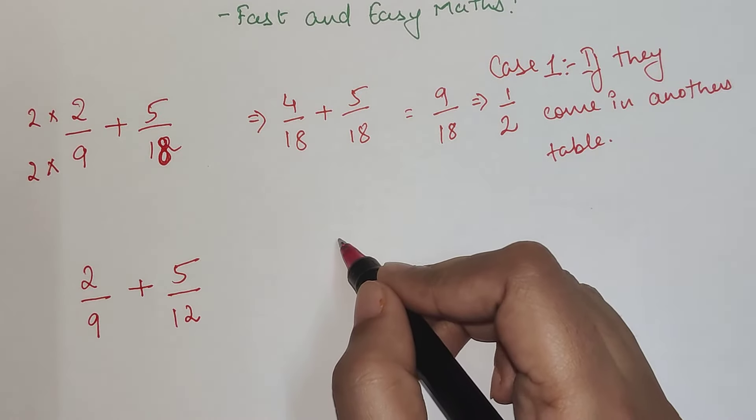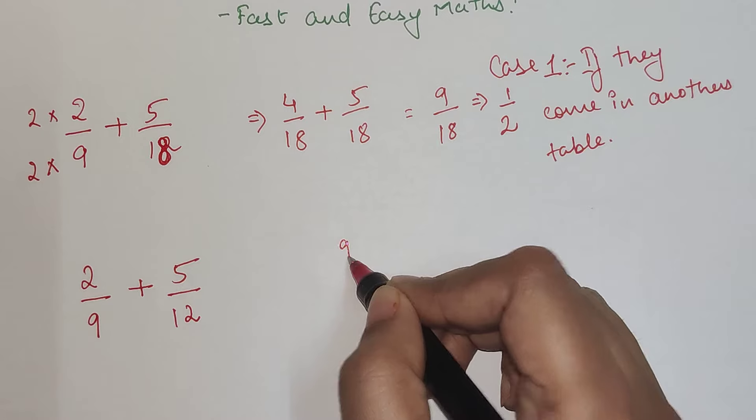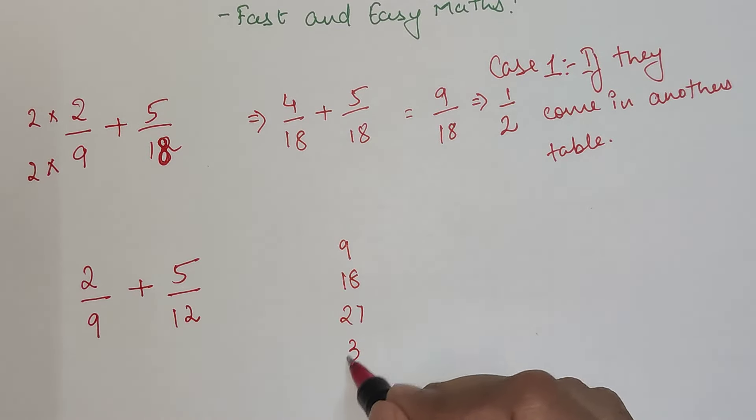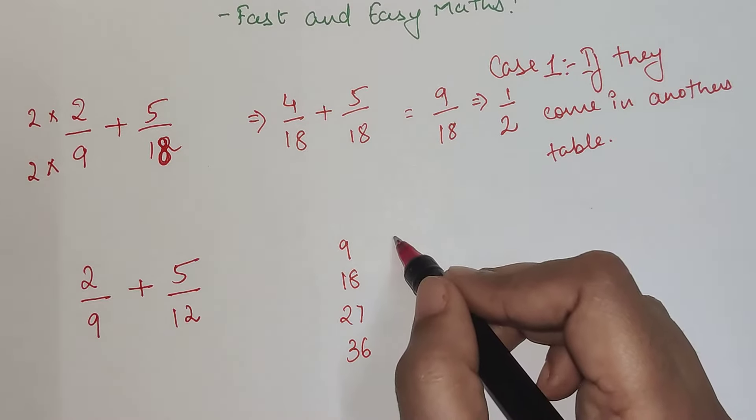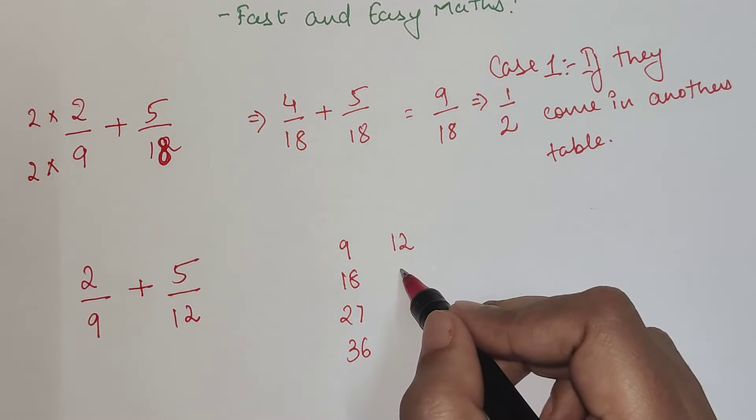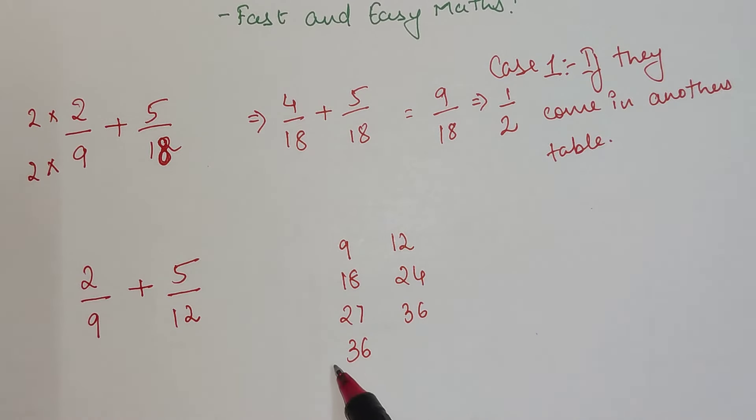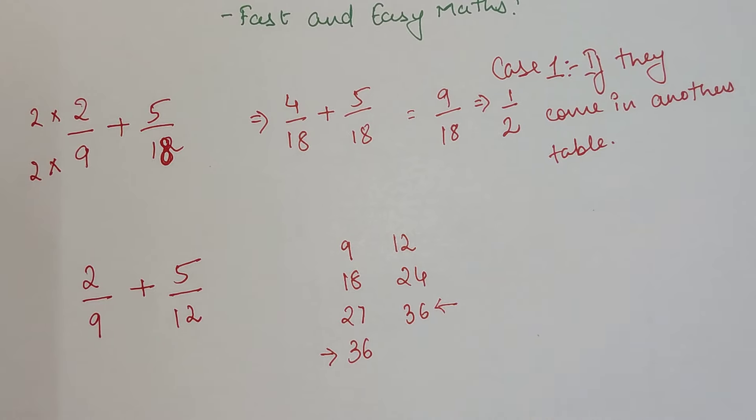One is you write down 9's table which is 9, 18, 27, 36. You write down 12's table: 12, 24, and 36. So now if you see, 36 is coming in 9's table and it is coming in 12's table as well.